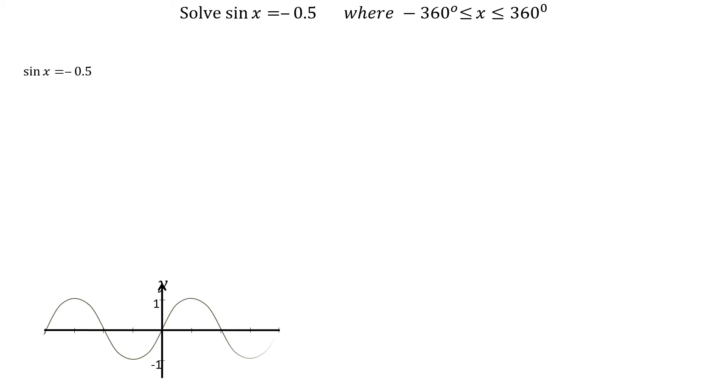To solve sin x equals minus 0.5, where x is between minus 360 degrees and plus 360 degrees, we first take the inverse of sin of 0.5, getting x equals 30 degrees.